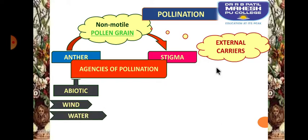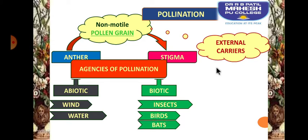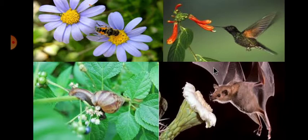Agencies of pollination can be abiotic factors like wind and water, whereas they can also be biotic factors like a number of animals — insects, birds, bats, etc. — that bring about pollination. Here is a slide with four different types of carriers.